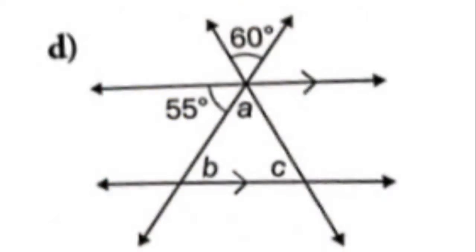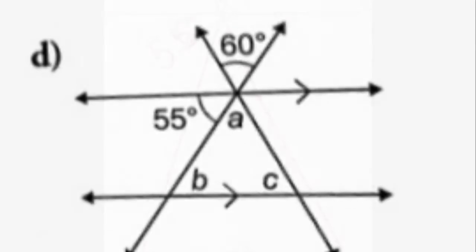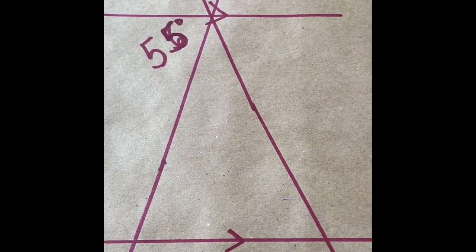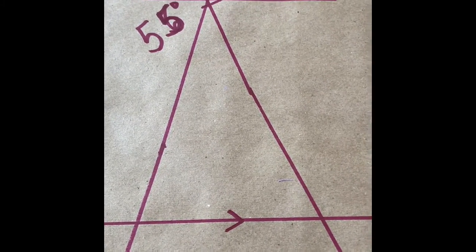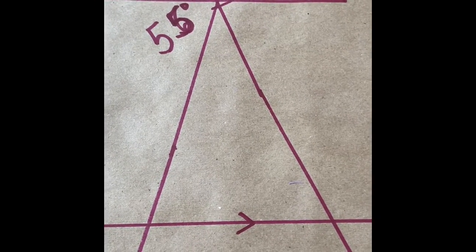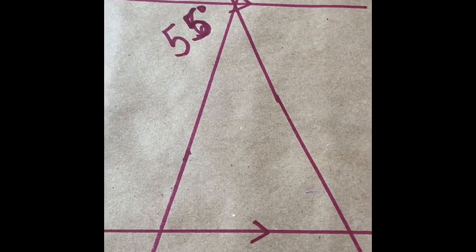Okay, so we're going to do one last question together today and it's a challenging question because it involves all the things we've learned so far about geometry this week. This question is challenging because it involves a lot of different things. It involves parallel lines, transversals, opposite angles and supplementary angles, all the things that we've learned so far in this unit.